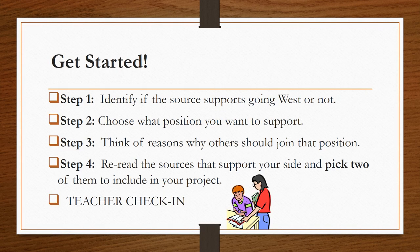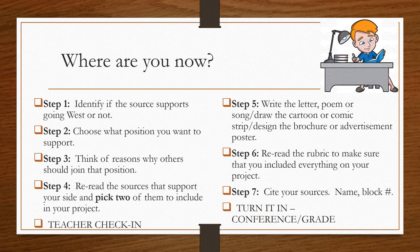So let's get started. Step one was to identify if the source supports going west or not — if we did that in class and graded it, you can move on to step two: choose what position you want to support. Step three: think of reasons why others should join that position. Step four: reread the sources from the packet that support your side and pick two to include in your project. After step four, you must have a teacher check-in. Here is your last slide — figure out where you are in the process and get to work.